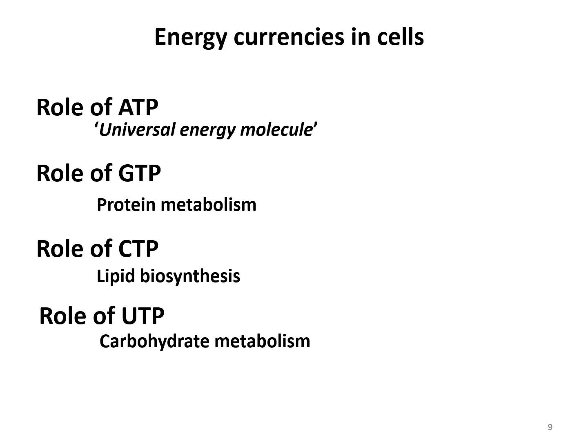By now you should appreciate the fact that ATP is the universal energy currency for the cell. But it is not the only energy carrier molecule in the cell, because you do have other variants such as GTP that is used for protein metabolism, CTP that is used in lipid biosynthesis, and UTP that is used in carbohydrate metabolism. But ATP is like the US dollar within ourselves — it is still the top currency used in our body.